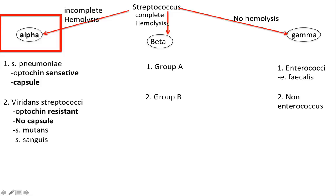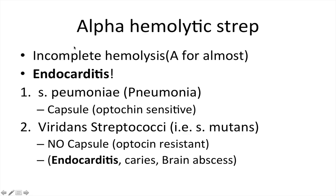Here's a flow chart organizing what comes next. Streptococcus branches into alpha, beta, and gamma hemolytic types. We'll focus on alpha strep. There are two main types tested most frequently: S. pneumoniae and viridans streptococci. Note that strep mutans is in the viridans category — zone in on this because it's the cavity bug. Strep mutans is part of viridans streptococci and is alpha hemolytic (incomplete hemolysis, 'A for almost').